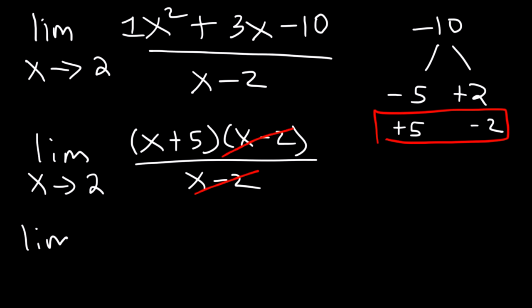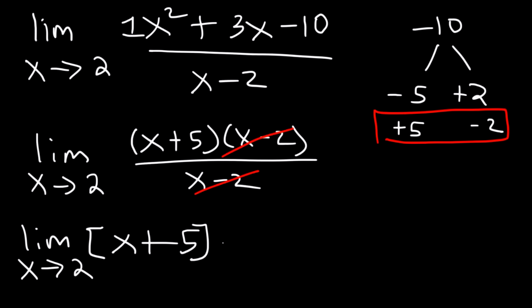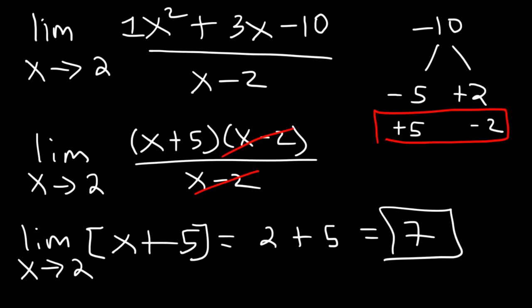We're left with the limit as x approaches 2 of x plus 5. Now we can use direct substitution — we won't get 0 in the denominator anymore. It's going to be 2 plus 5, which is 7. So that's the limit.